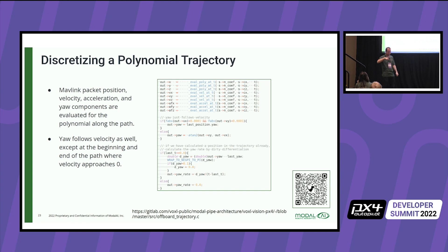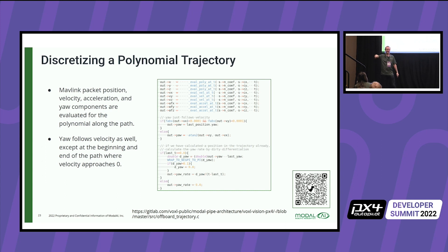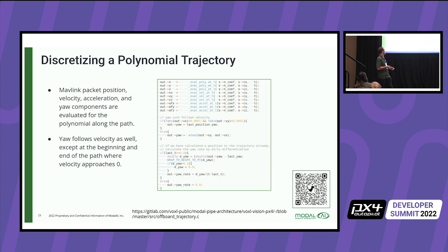We have a demo where we fly a figure eight autonomously by sending off-board commands in a loop. If you turn off acceleration and velocity inputs, PX4 flies a figure eight about twice as big compared to when you send in the feed-forward components. When you load up the logs, you'll see PX4 is logging spot-on to the path we actually commanded — PX4 can fly these paths very accurately if you're diligent about populating the full MAVLink message and ensuring the feed-forward terms are accurate.